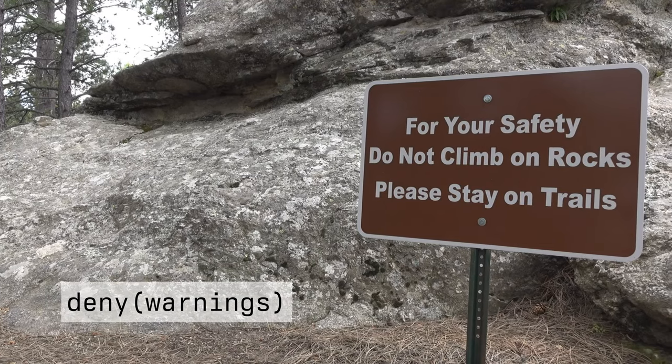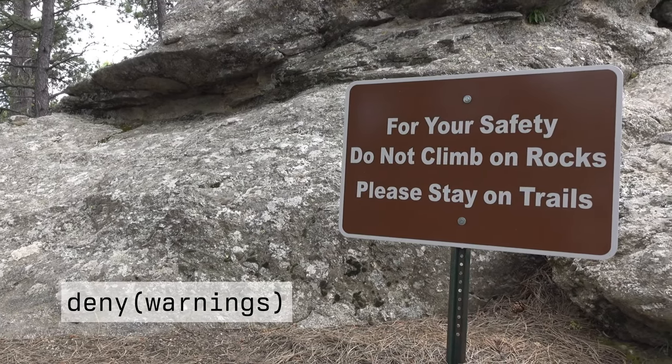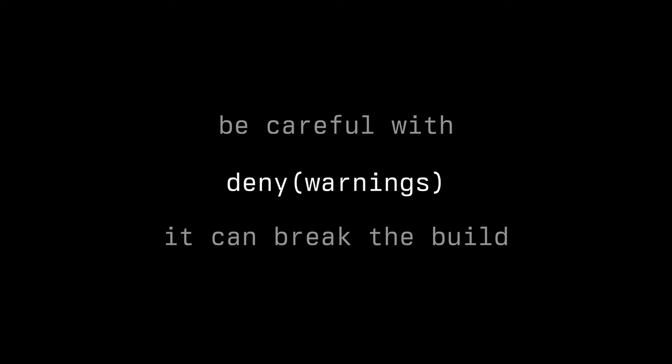deny(warnings) takes the third place, and this is an interesting one because it's one I personally don't recommend. We are promoting all warnings to errors here, and on the surface that's a very good thing — it means our code is very strict. However, it also prevents the ability to automatically upgrade your code to a new version of Rust. If a new warning is introduced in the next version, suddenly your CI system will break without manual intervention. So I don't think it should be added automatically to every crate.